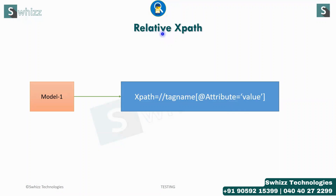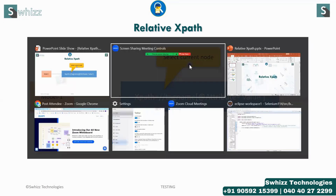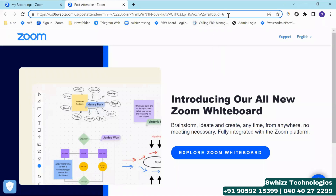To make our automation tool understand whatever locator we give to identify a particular element in the web page, first of all, Selenium needs to know this is a relative XPath. For that, you have to start your syntax with two forward slashes, which represents selecting current nodes. Let's move on to a particular site to understand what this current node means.